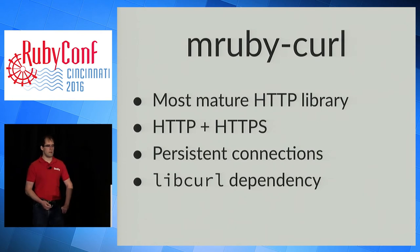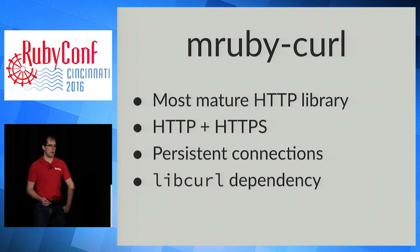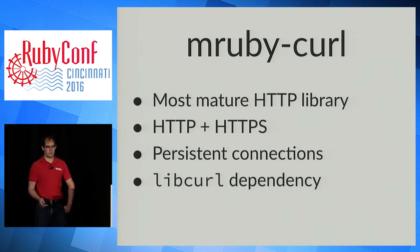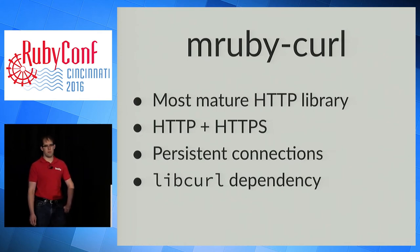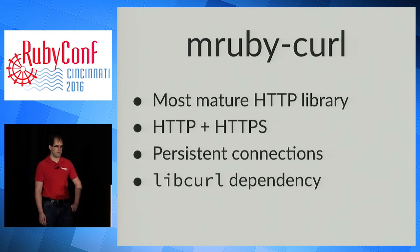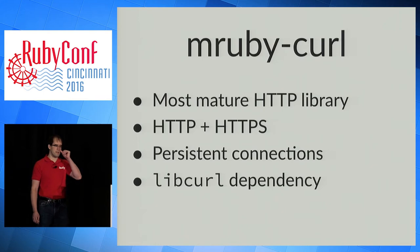For API requests, I chose mruby-curl. I evaluated several other HTTP libraries for MRuby and this one seemed the most mature, mostly because it uses curl. It supports both HTTP, which we use in our development environment, and HTTPS for accessing our production systems. The library also supports persistent connections, which is especially important for HTTPS requests. The only downside is the libcurl dependency, which must be cross-compiled and linked into the tool.